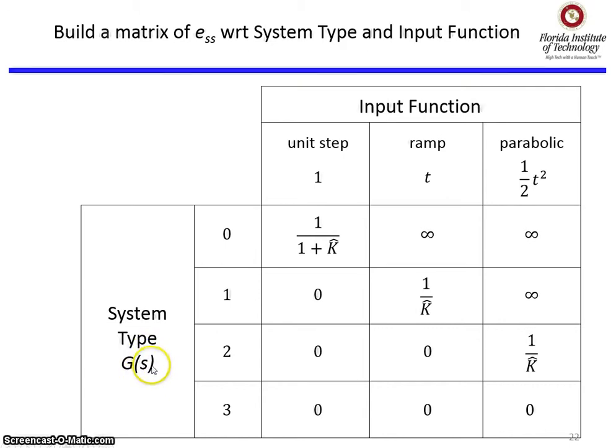Basically, if G(s) is a type 0 system, then you'll have finite error to a unit step and infinite error for ramp and parabolic. If it's a type 1 system with unity feedback, you'll have zero steady-state error for a step, finite for a ramp, infinite for parabolic, and so on. So what you can see is,